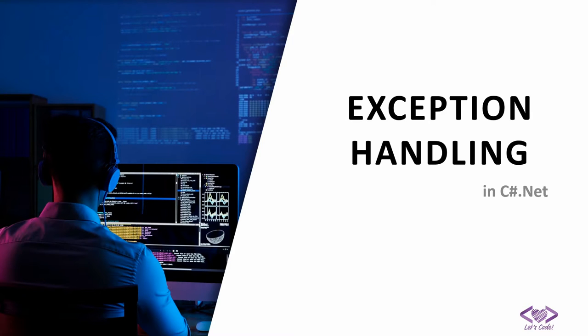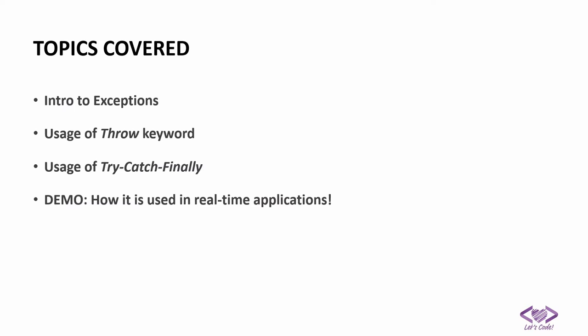Hi friends, welcome back to Codeligent. In this video, we will see how we can handle exceptions in C# .NET. We will first understand what exceptions are, how we can produce them using the throw keyword, how the compiler produces them internally, and how we can handle them using try, catch, and finally blocks. We'll also see how to gracefully exit instead of the application crashing. Then we'll have a real-time application simulation demo.